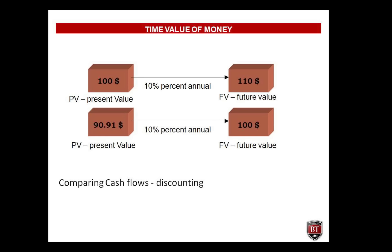The amount you receive today is called Present Value. The amount to be received in the future is called Future Value. To decide between investment opportunities, we need to calculate the present values of future cash flows. The process of getting the present value of future cash flows is called discounting, which allows us to compare future cash flows at today's value terms.